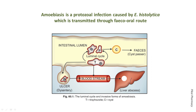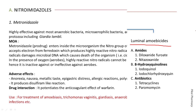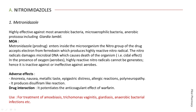While in the tissue, the trophozoite never turns into the cyst form. Anti-amoebic drugs are broadly classified into luminal amoebicides and tissue amoebicides. Luminal amoebicides act on trophozoites in the gut lumen, whereas tissue amoebicides act on trophozoites present in tissues other than the intestine. However, tissue amoebicides like nitroimidazoles and alkaloids can act on both intestinal and extra-intestinal tissues. You can see the full classification of anti-amoebic drugs on the slide.